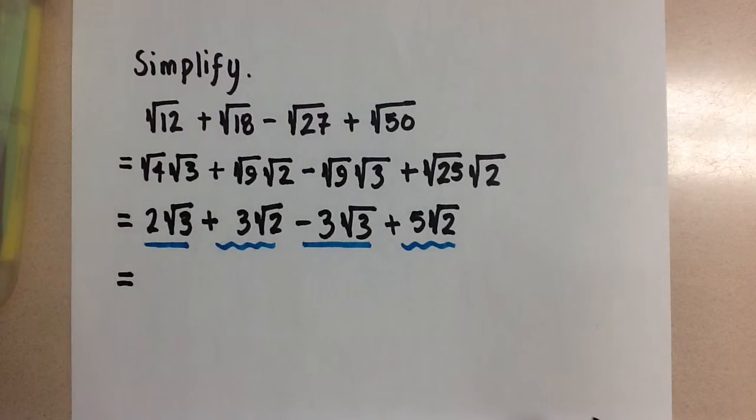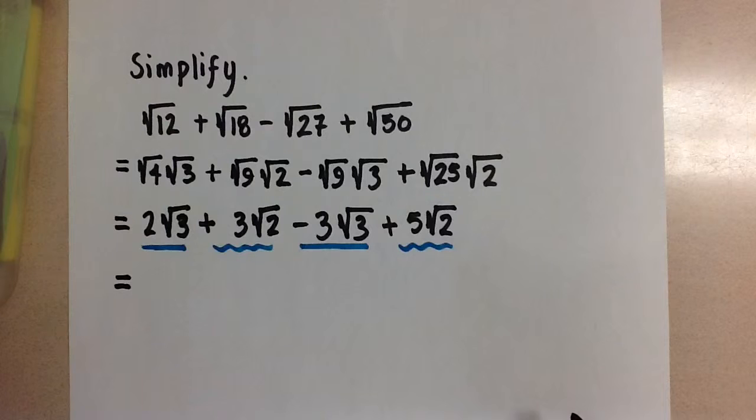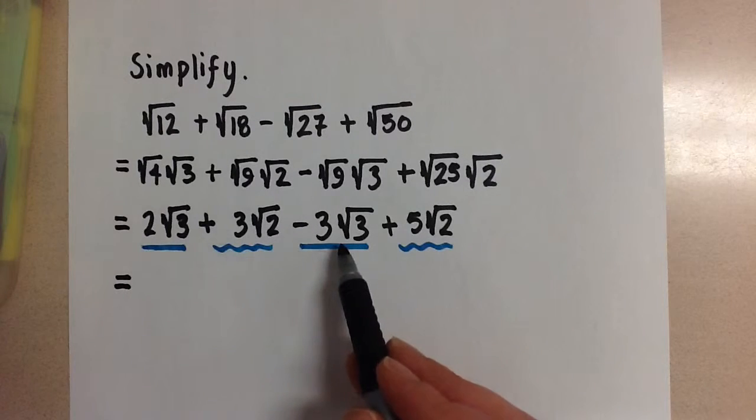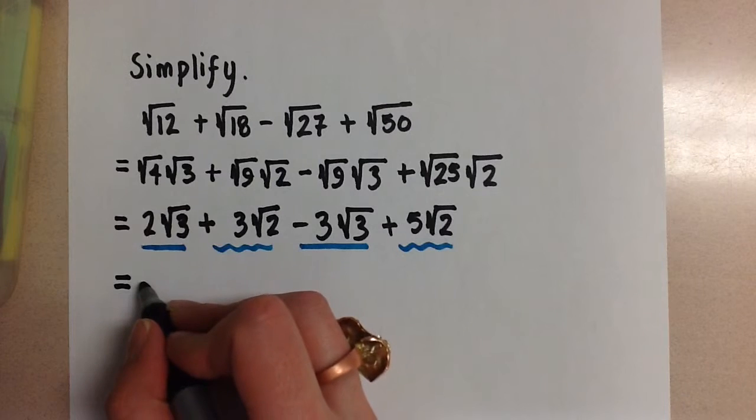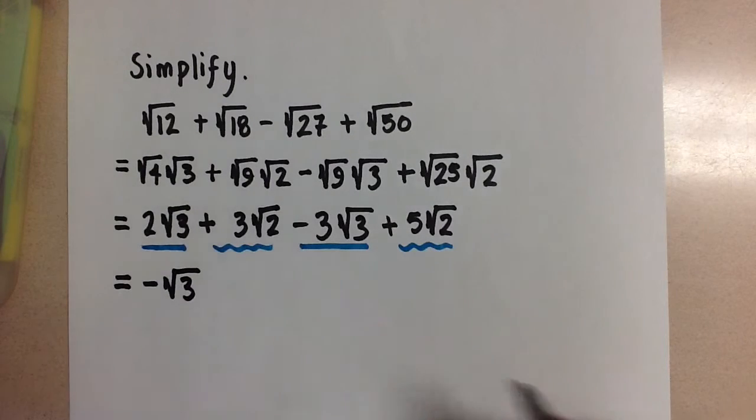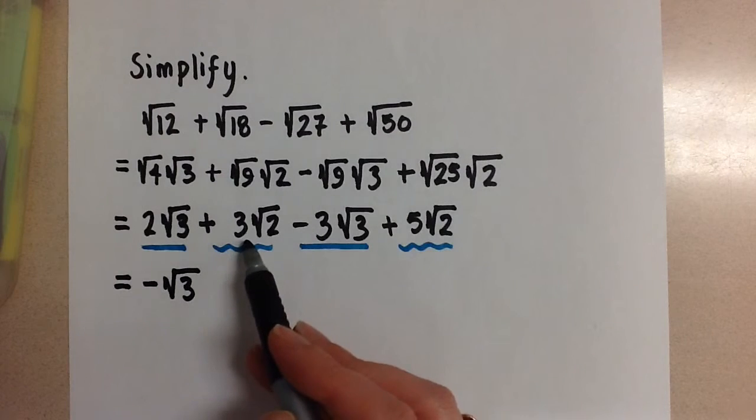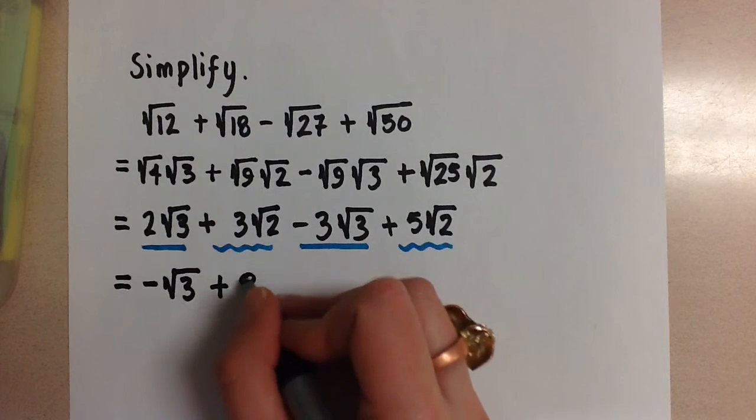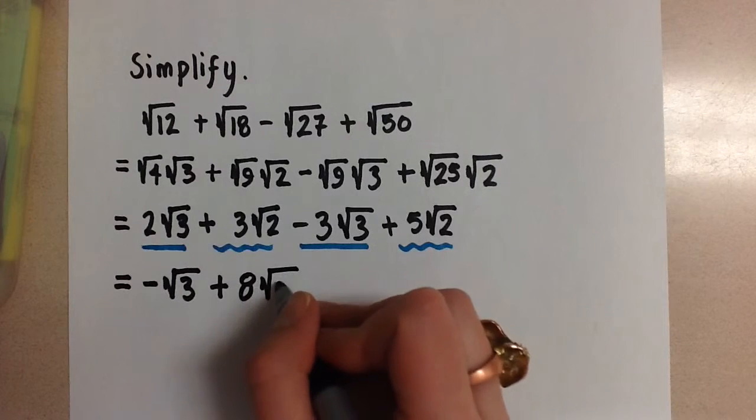We're going to add the coefficients only and the radicals stay the same. So 2 root 3 minus 3 root 3 gives us minus root 3, and then 3 root 2 plus 5 root 2 is plus 8 root 2.